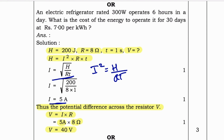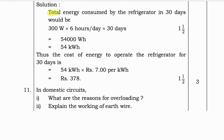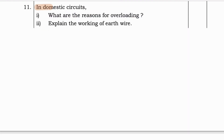Optional question: An electric refrigerator rated 300 watts operates 6 hours a day. What is the cost of energy to operate it for 30 days at rupees 7 per kilowatt hour? Solution: Total energy consumed = 300 W × 6 hours/day × 30 days = 54,000 watt hours = 54 kilowatt hours. Thus the cost = 54 kWh × 7 rupees/kWh = 378 rupees.